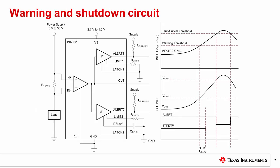Next, let's consider a warning and shutdown circuit. The goal here is to provide a first alert when current has exceeded a warning threshold, and a second alert when current has exceeded a critical threshold. This circuit is simple to implement with the INA302, a current sense amplifier with dual comparators. The warning and critical thresholds are set with external resistors, and the alert pins are pulled up to the supply through pull-up resistors.